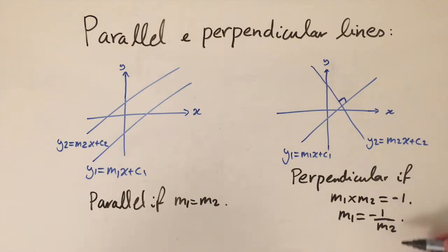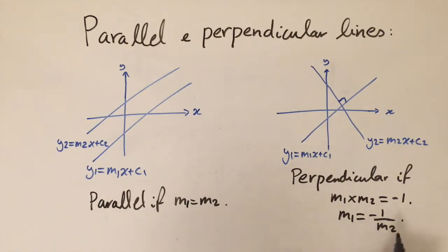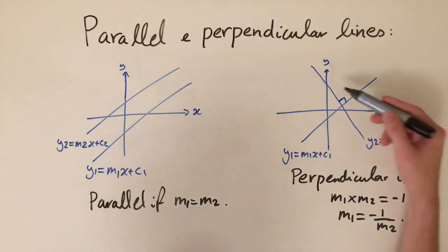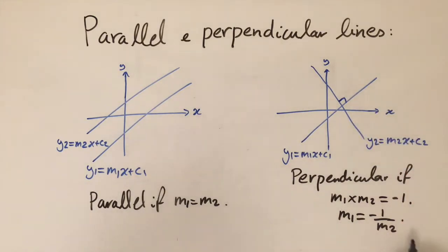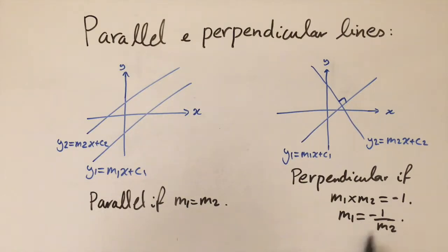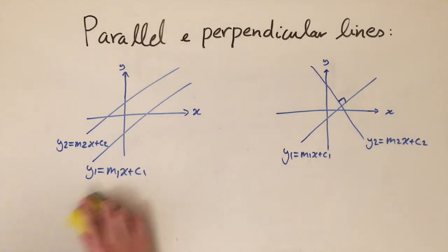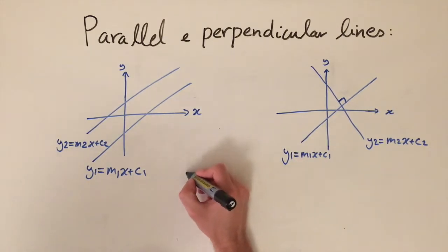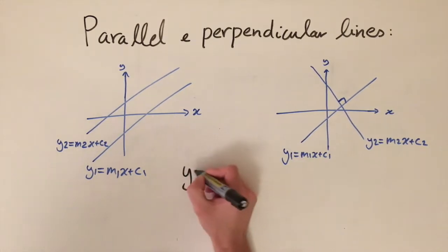This expression — minus one divided by m2 — is called the negative reciprocal of m2. What we've done is taken m2, flipped it over to get one divided by it, and put a negative sign in front. So to find the gradient of a perpendicular line, we just replace the original gradient with minus one divided by m2.